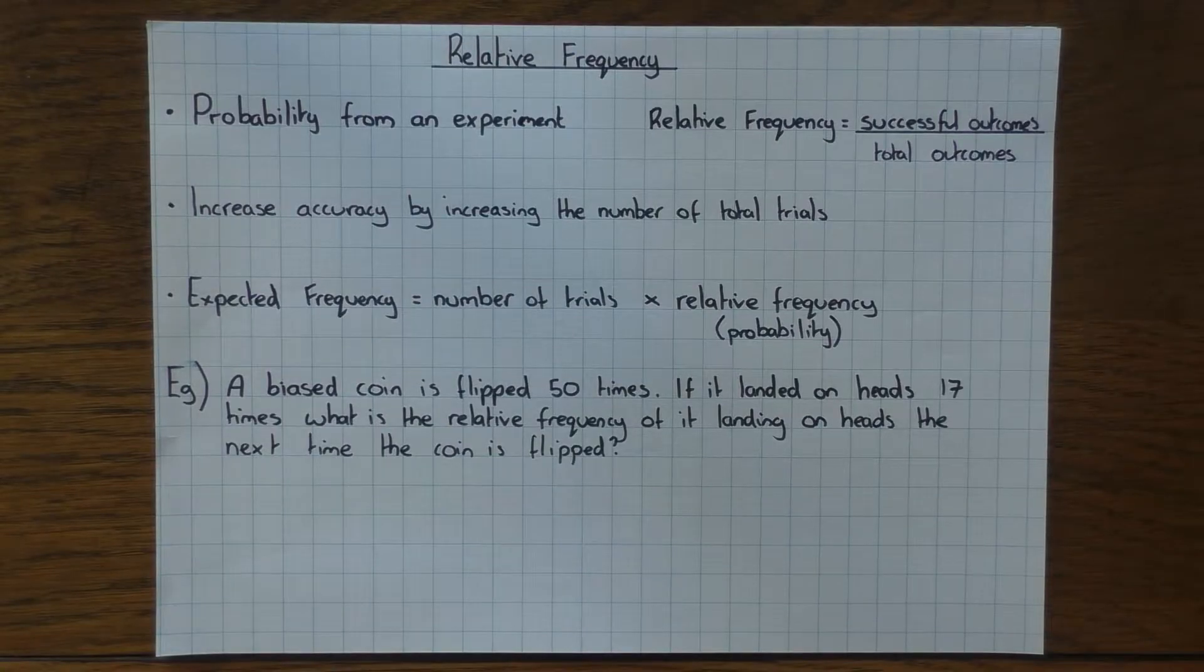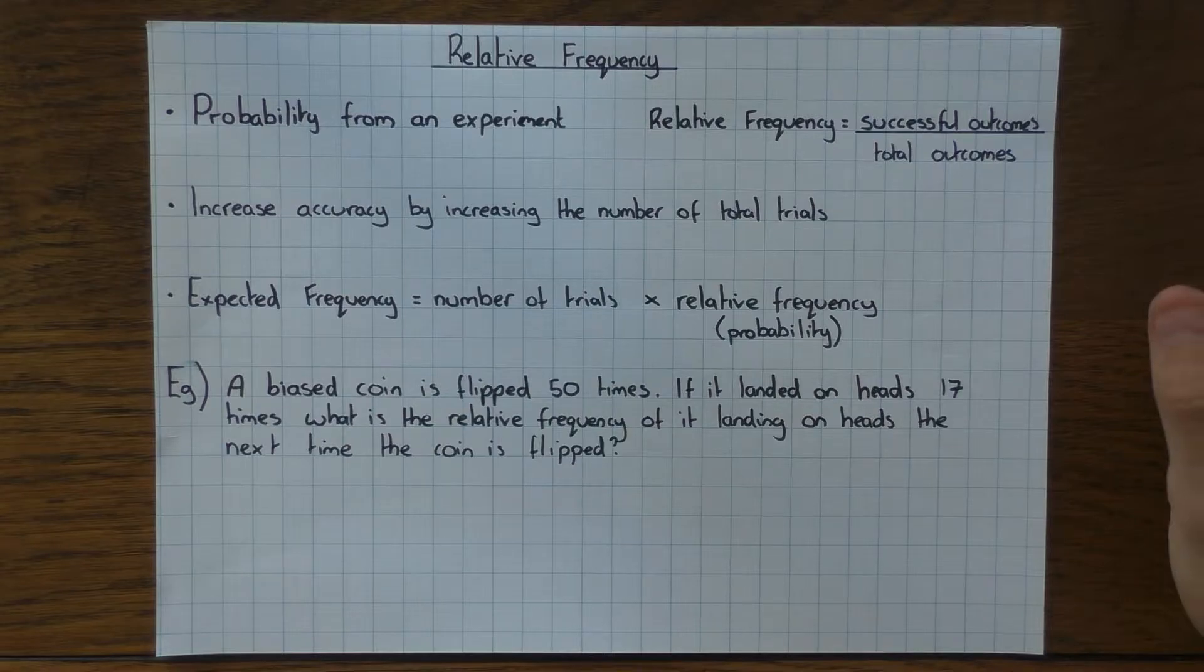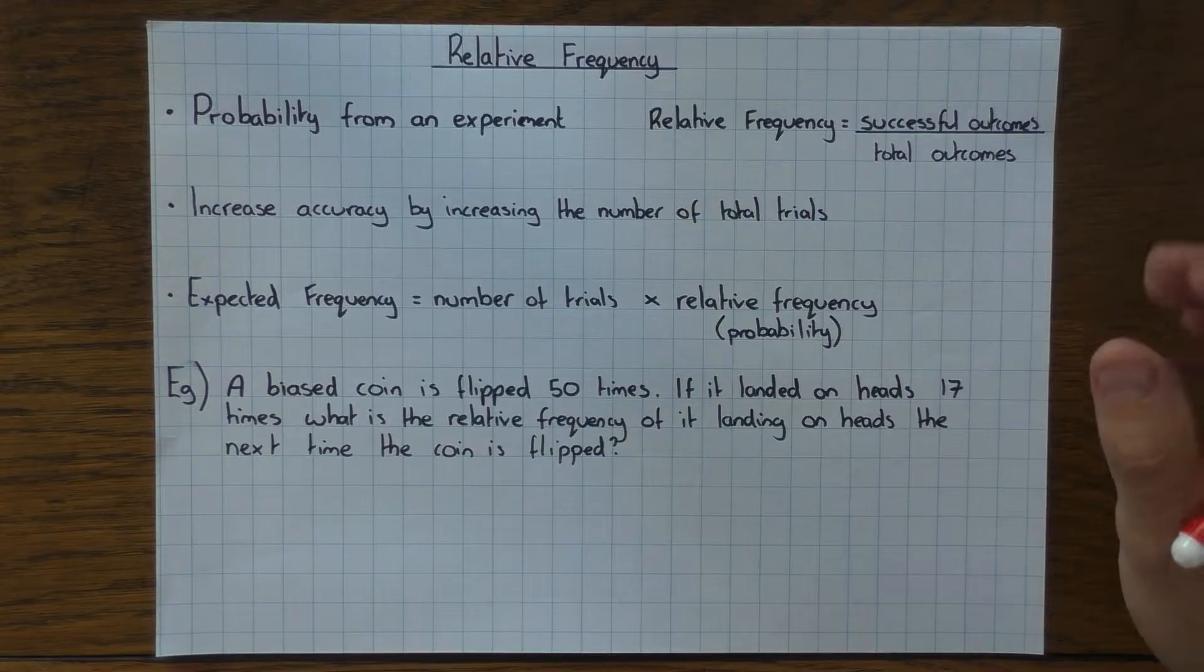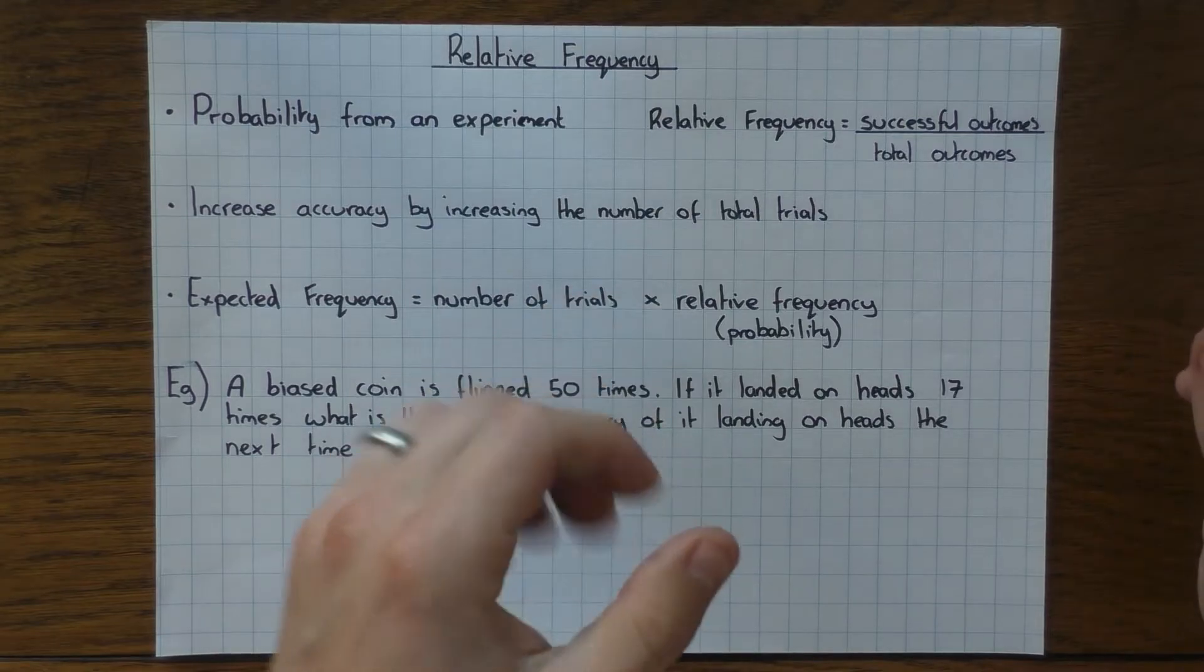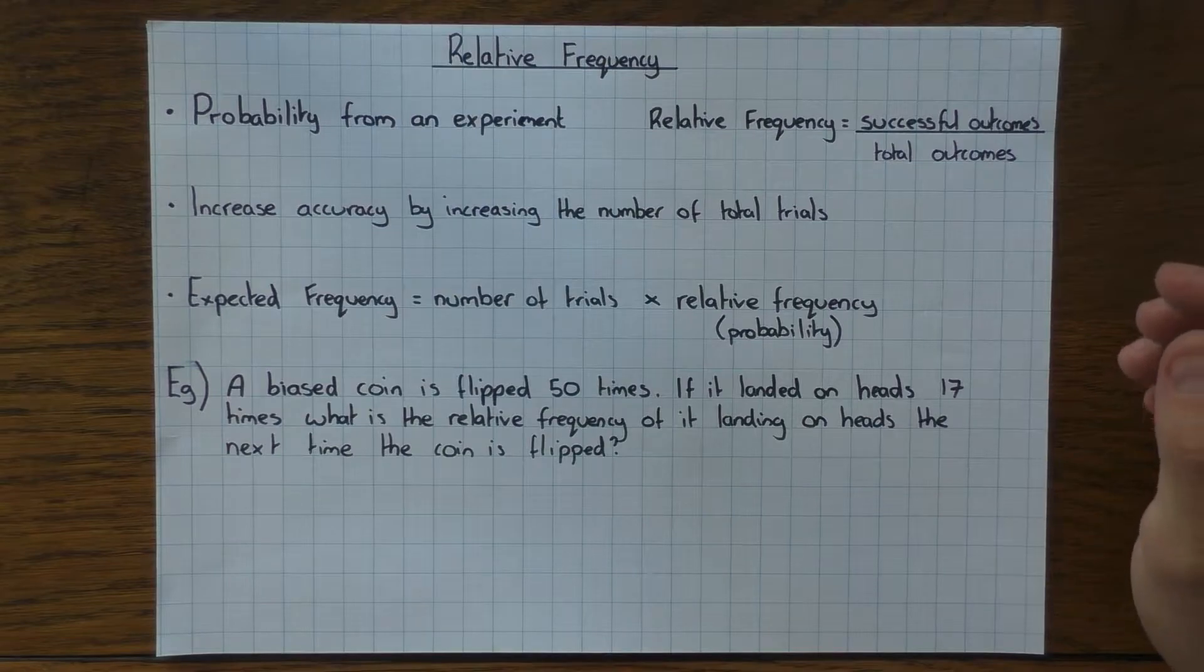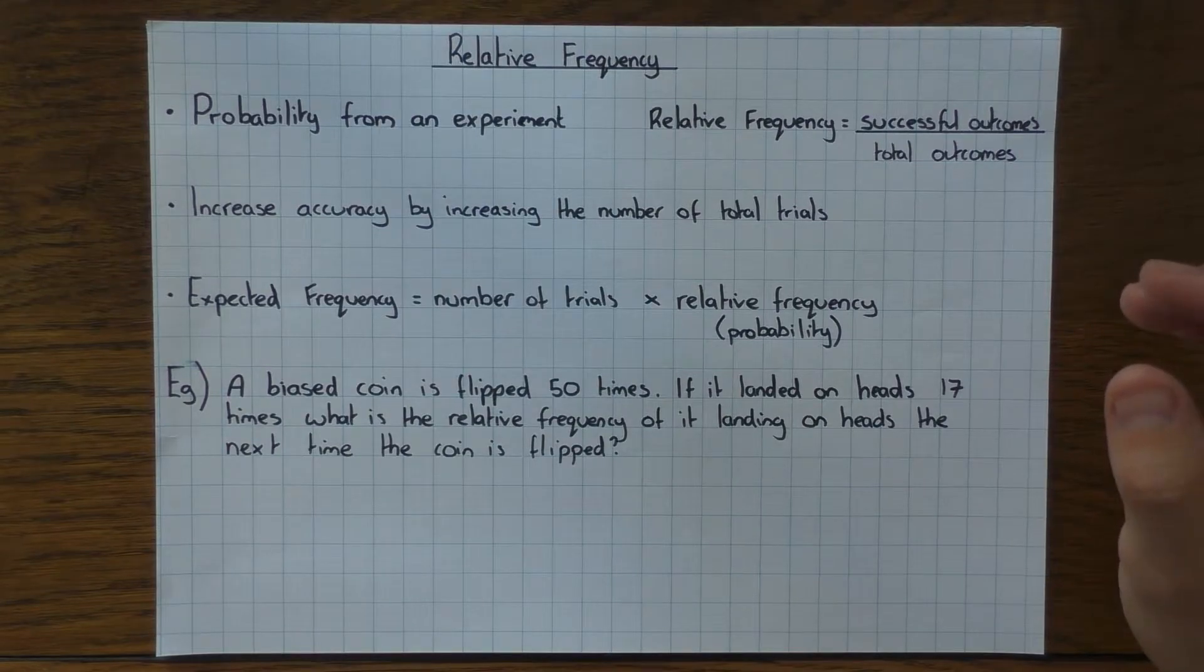Hi guys, in this video we're going to have a look at relative frequency. So relative frequency is how we would find a probability from doing an experiment. So when would this be useful? If I was to have a bottle and flip it up and try to get it to land on the table upright, and I said what's the probability of me doing that, there's no real way of knowing.